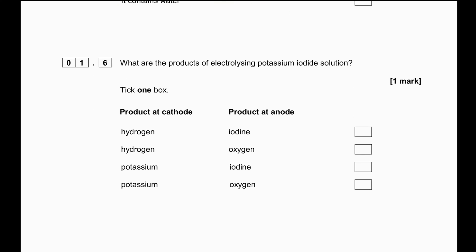What are the products of electrolyzing potassium iodide solution? The ions present are potassium ions, iodide ions, H⁺ ions, and OH⁻ ions. Between the cations potassium and hydrogen, hydrogen has the upper hand because lower reactivity species are released first. So hydrogen is produced at the cathode. Between iodide and hydroxide, iodine is released at the anode because it's a potassium iodide solution. So hydrogen at the cathode and iodine at the anode.